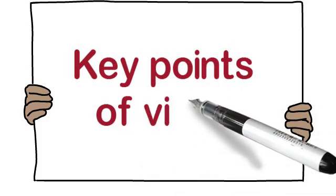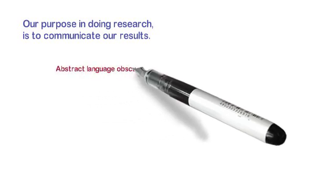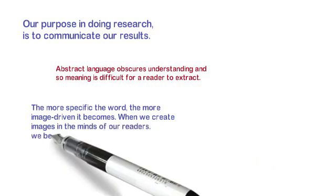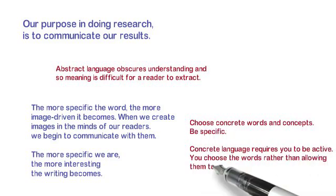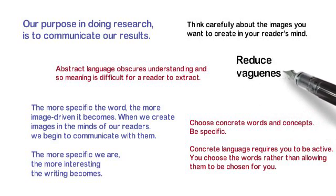Here are the key points of this video. Our purpose in doing research is to communicate our results and connect with readers, so we need to make our language accessible. Abstract language obscures meaning and makes it difficult for the reader to extract meaning. The more specific the word, the more image-driven it becomes, and we create images in the minds of our readers. The more specific the writing is, the more interesting it becomes — we want readers to be captured and convinced by what we're saying. Choose concrete words and concepts, be specific, and be active in choosing your words rather than allowing them to be chosen for you. Think carefully about the images you want to create in your reader's mind, and try all the strategies in this video to reduce vagueness in your writing.